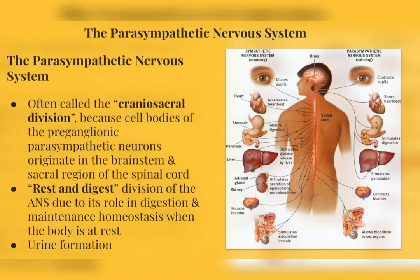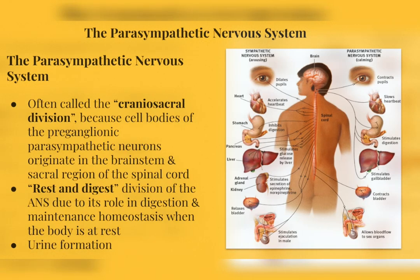The sympathetic division functions in mediating the body's visceral response to emotion. The parasympathetic nervous system is often called the craniosacral division, because the cell bodies of preganglionic neurons originate in the brainstem and the sacral region of the spinal cord. It's also known as the rest and digest division because of its heavy role in digestion. The parasympathetic division also functions in homeostatic maintenance when the body is at rest and in the formation of urine.